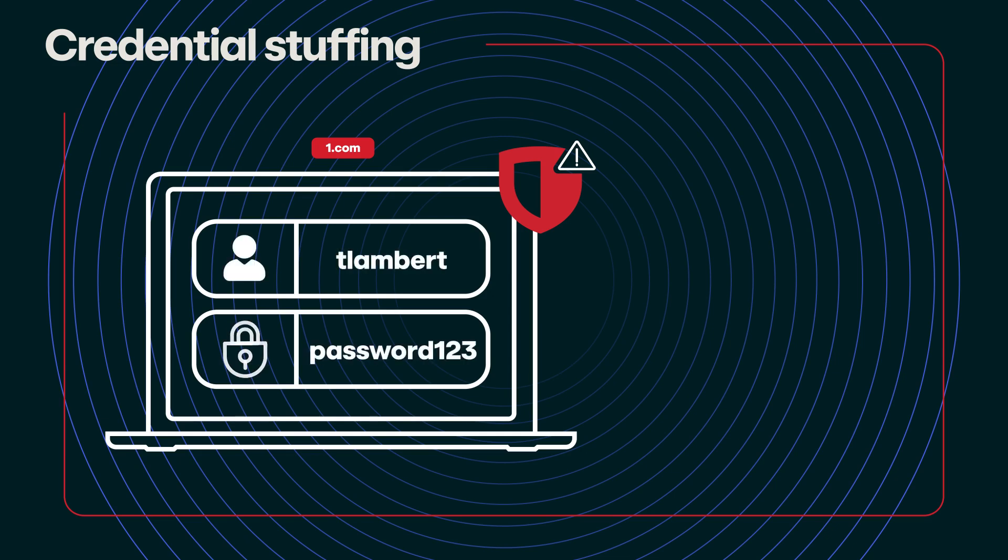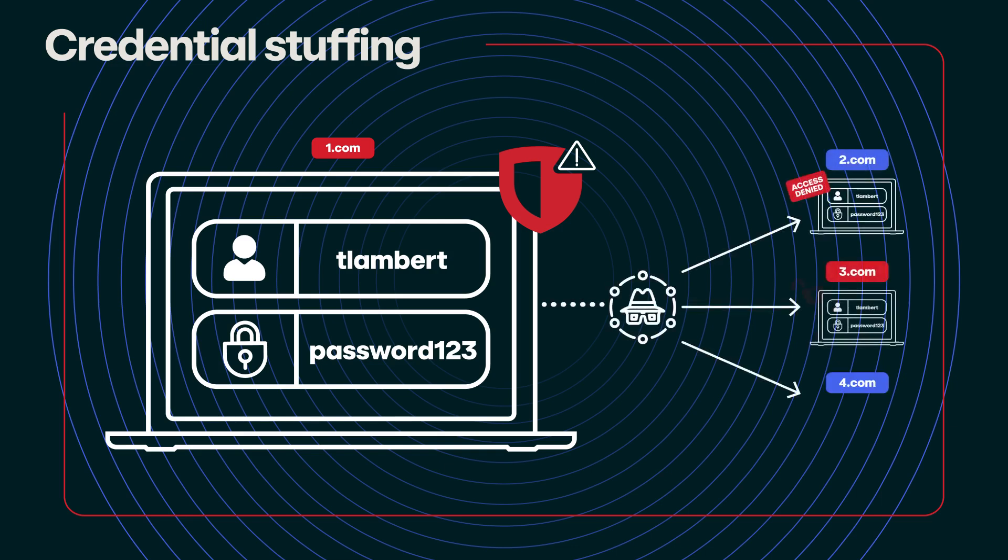Credential stuffing is a kind of identity attack where an adversary uses the username and password from one service to try to log in as you on other services. This is sometimes successful because people reuse their credentials a lot. For example, if I use service one with credentials TLambert and password123, and service one gets breached and those credentials are exposed, an adversary can take them and use them in a credential stuffing attack against services two, three, four, or whatever services they think I might use. The easiest way to fight against credential stuffing is simply not to reuse passwords between services — use a different password with each one and use a password manager if you can.